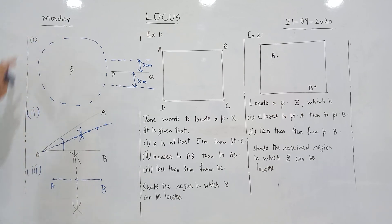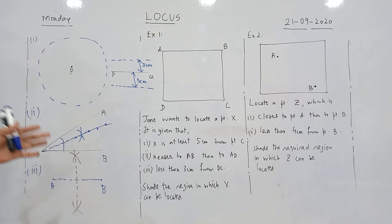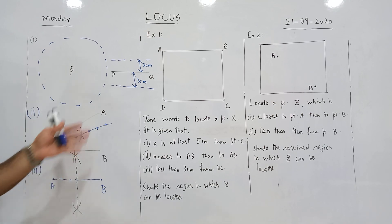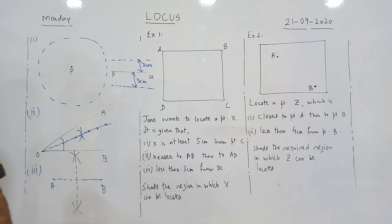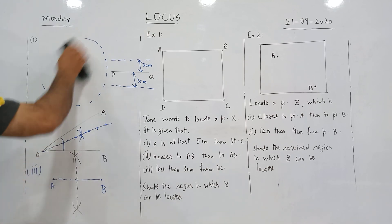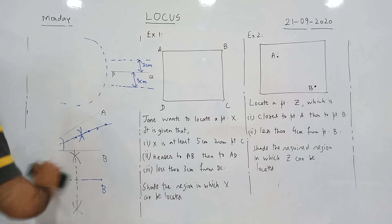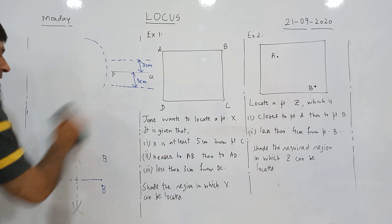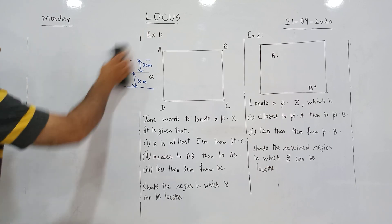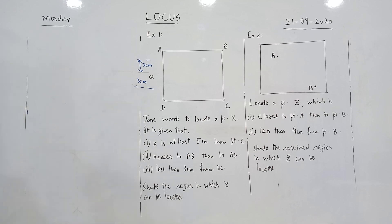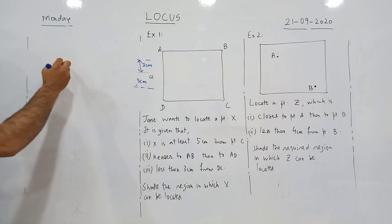After this we have 3D locus. The previous examples were 2D locus — you can also say loci, which is the plural of locus. These are loci in a plane, or in a two-dimensional surface.